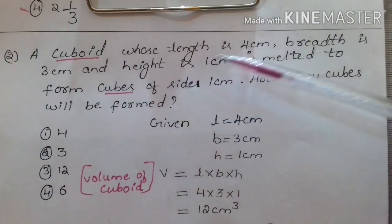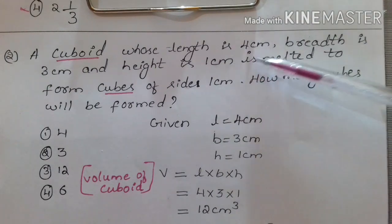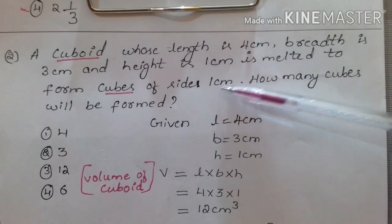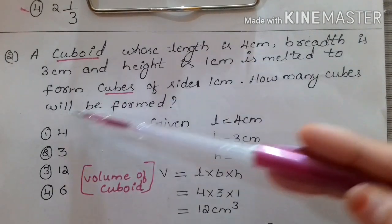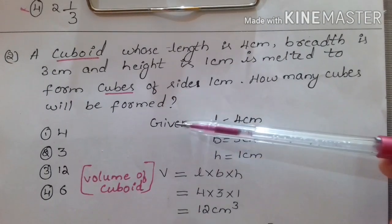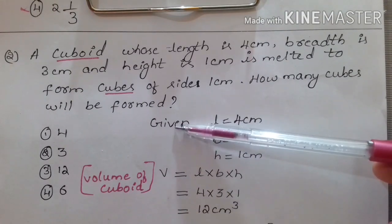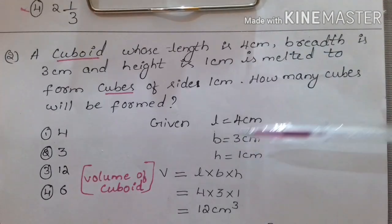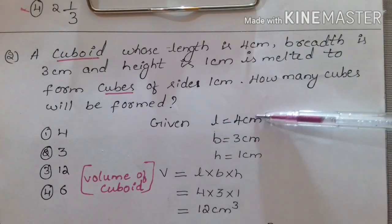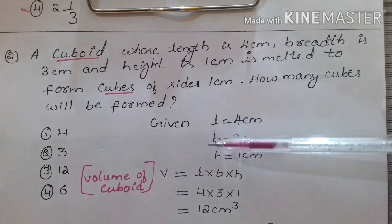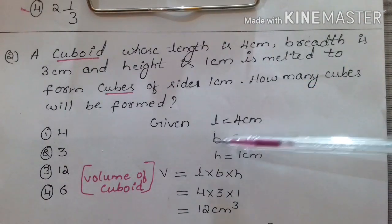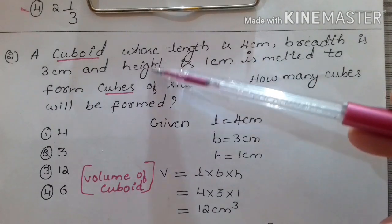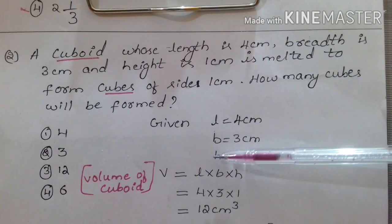Next question: a cuboid whose length is 4 cm, breadth is 3 cm, and height is 1 cm is melted to form cubes of side 1 cm. How many cubes will be formed? Given: length of cuboid is 4 cm, breadth is 3 cm.